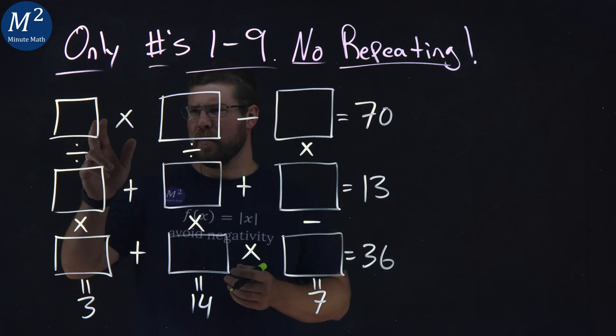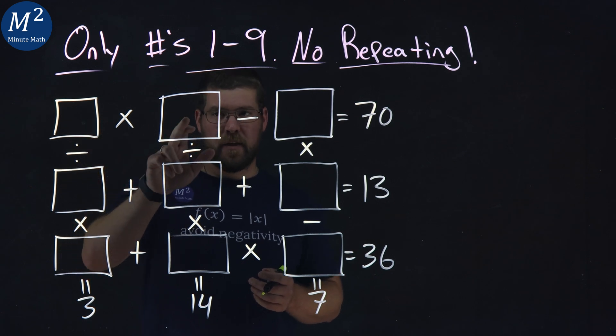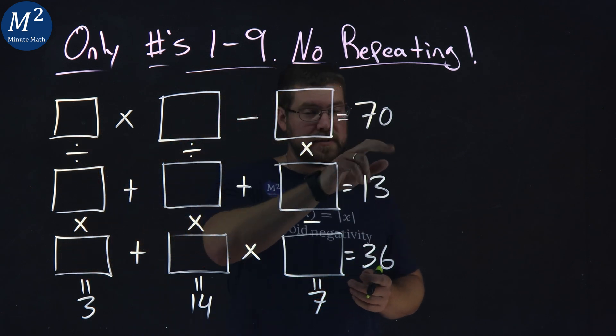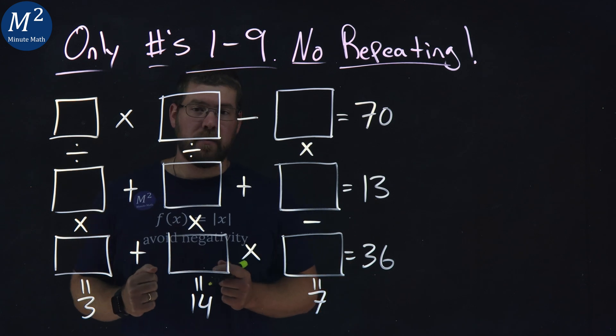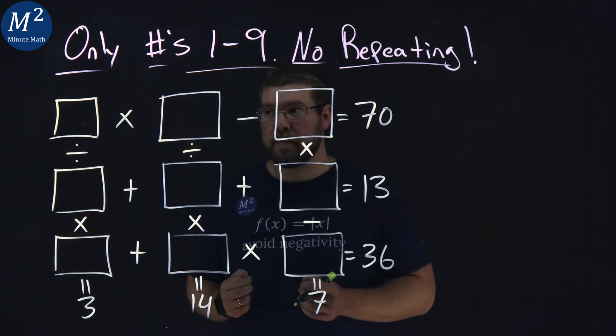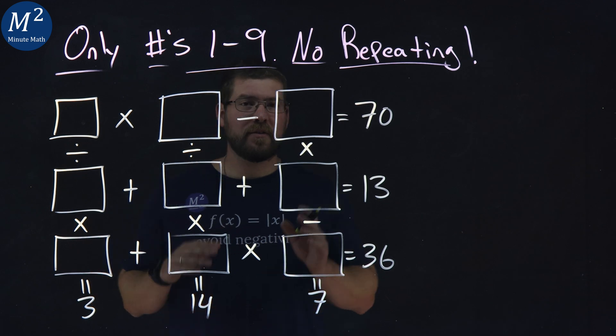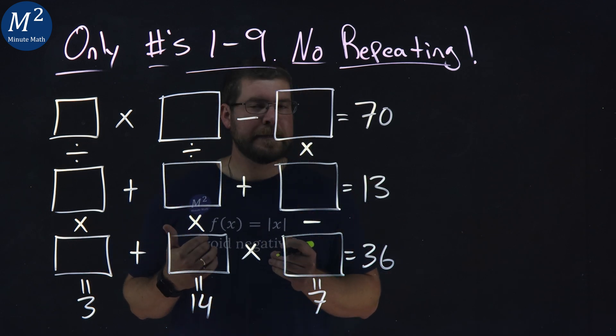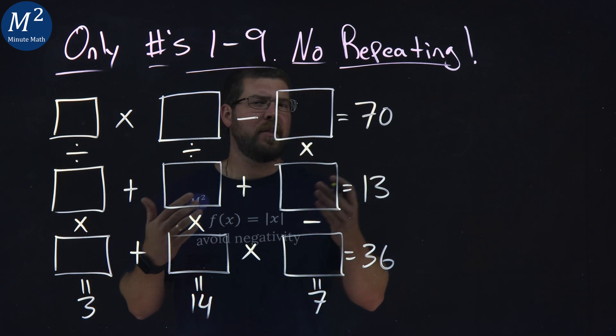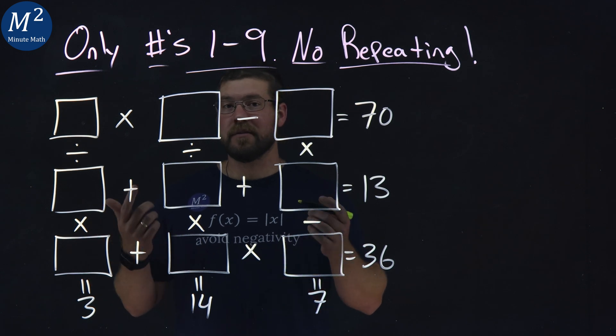So we have a blank number we don't know, times another one minus another number equals 70, and we can't repeat those numbers, and there's all these different operations going on. Pause this video, see if you can solve this problem here, but as always, I'm going to show you my thought process and how I solved this problem.